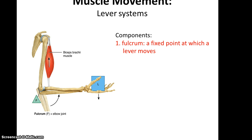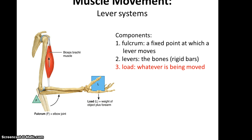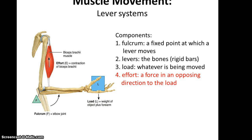When muscles are moving bones, they're acting as a lever. The fixed point at which the lever is going to move is what we call the fulcrum — in this case, the elbow joint itself. The levers are the rigid bars, which in our case are the bones that the muscle is attached to. The load is whatever is being moved — in this case, the block in the hand plus the weight of the arm. The effort is the force in the opposing direction of the load; as you can see, the load is being pulled down by gravity, so the effort to hold it up by the muscle is what's referred to as the effort, caused by the muscle contracting and generating that force.